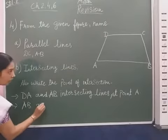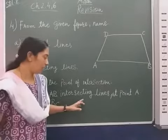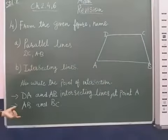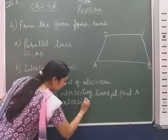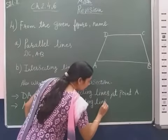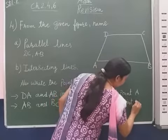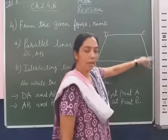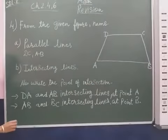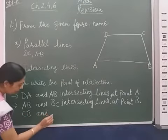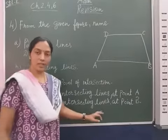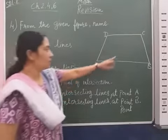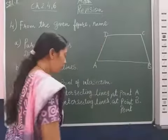Next, line AB and line BC — these two lines are intersecting lines and they intersect at point B. Also, line CB and line CD are intersecting lines, and their intersection point is point C.